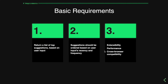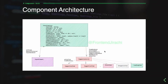Let's first take a look at the component architecture. The auto-complete widget could be broken down into three parts: the main auto-complete component, the input element, and the suggestions list.